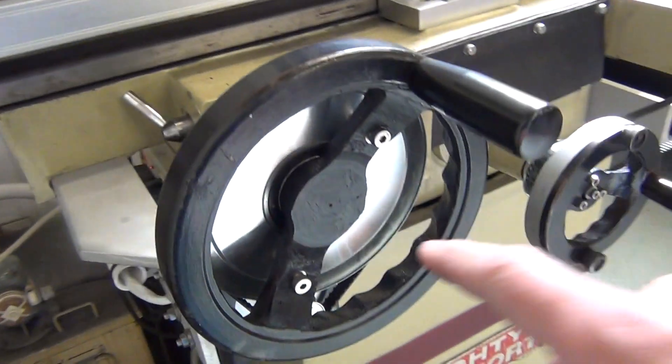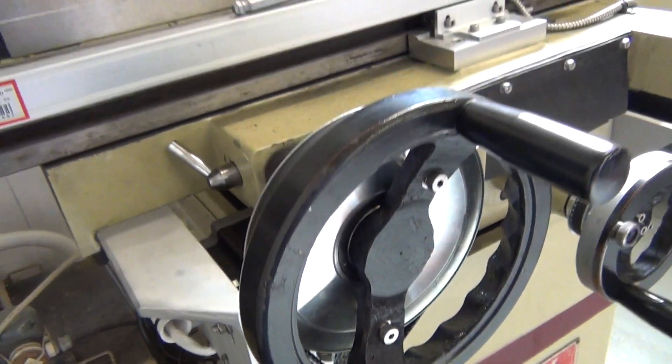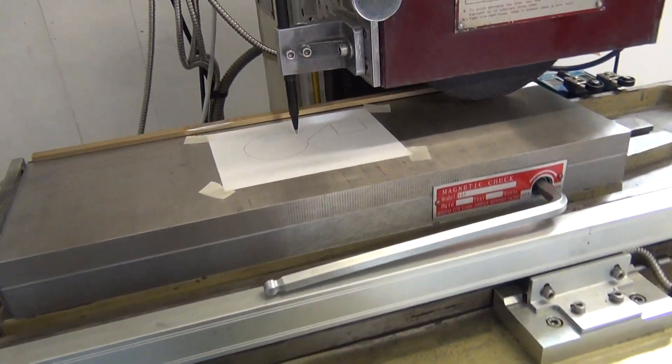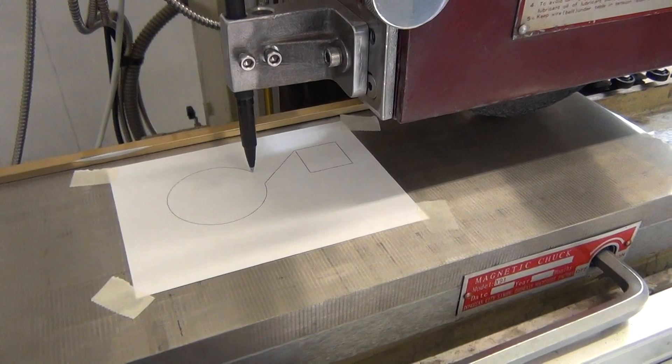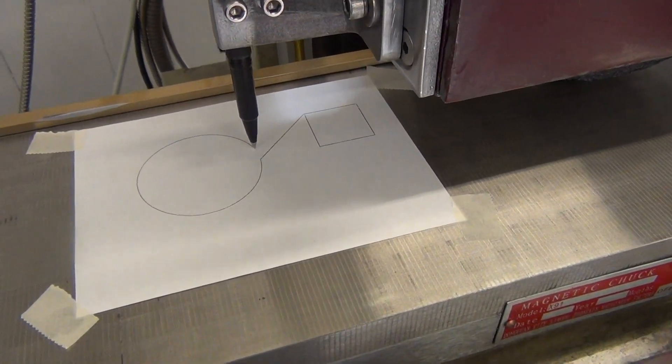This x-axis, I've got a bearing in here if I want to engage it in case I want to use the grinder in manual mode. But let's see how our circle, diagonal line and square are doing up here.